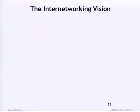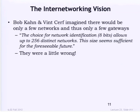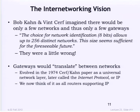Cerf and Kahn's original paper said you needed to identify the network and within the network a host. They wrote that the choice of network identification allows for up to 256 distinct networks, and 'this size seems sufficient for the foreseeable future' — famous last words. To be on the internet, a network only needs to support IP addressing and agree to send packets of at least 20 bytes — the length of the IP header. So much so that people have written standards on how to send internet protocol over carrier pigeon, and someone actually demonstrated something like this.